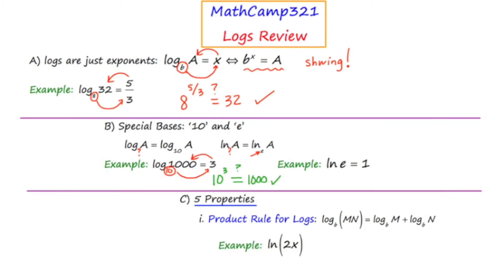Alright, now we've got another example, and that is ln of e equals 1. So again, there's no base here, but there is an implied base of e, so I'll go ahead and write that in, and now I'll do a schwing to see if this is a valid log equation.